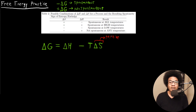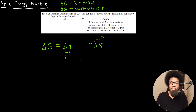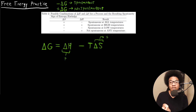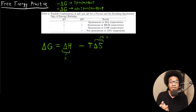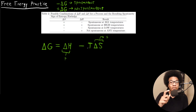Now let's look at another scenario: both ΔH and ΔS are positive. In this case, the process will be spontaneous only if the temperature is high enough. We have a positive ΔH, but since ΔS is also positive, the TΔS term will be negative. If the enthalpy is greater than that term, you'll have a non-spontaneous process. But if the temperature is high enough, the magnitude of TΔS will be greater, giving you a negative ΔG — spontaneous only at high temperatures.